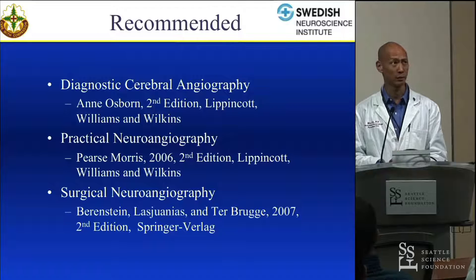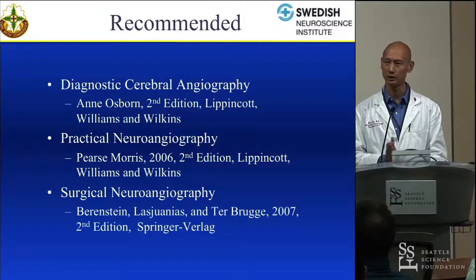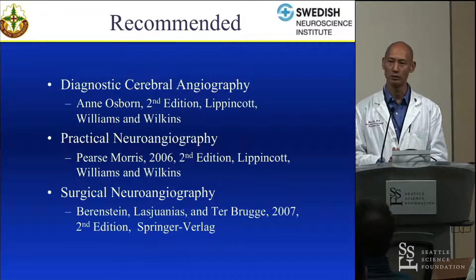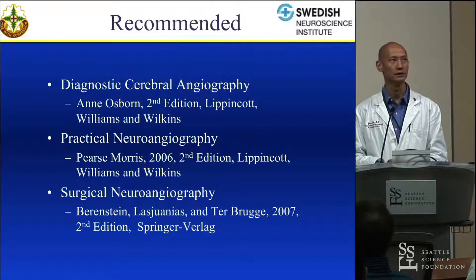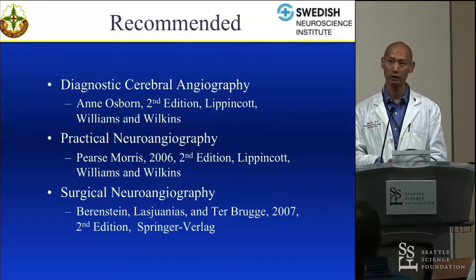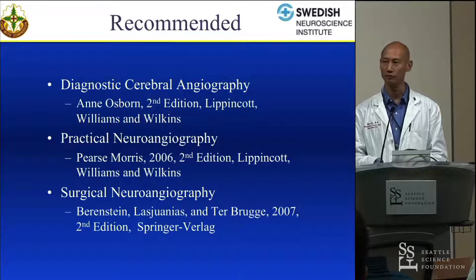The book I read when I was a resident was Osborne, which is actually a really easy to read book, but it does have some problems with the images and the labels. Pierce-Morris is a good book about techniques, and when you want to look to the Bible for embryologic development of certain things and anomalies, the Berenstain book is good. There's another book by Bradac — B-R-A-D-A-C. Somebody emailed me after looking at a video of my talk and asked what I thought about this book. I went to the book and it's actually very well illustrated — the angiograms are fairly modern and the labels are very good too. I haven't read it cover to cover, full disclosure, so I don't know if it would be a good entry-level book, but from what I can tell, it's very good.